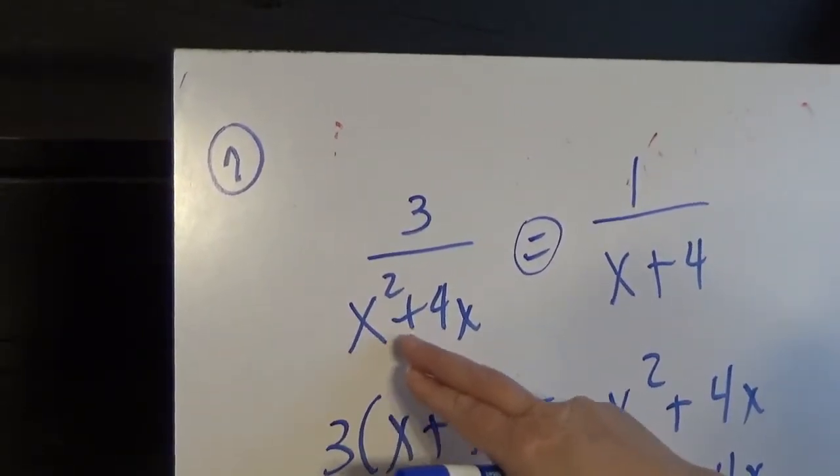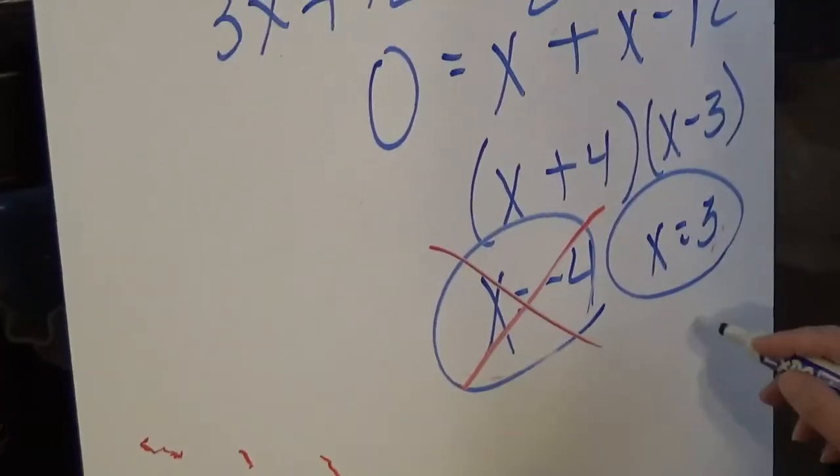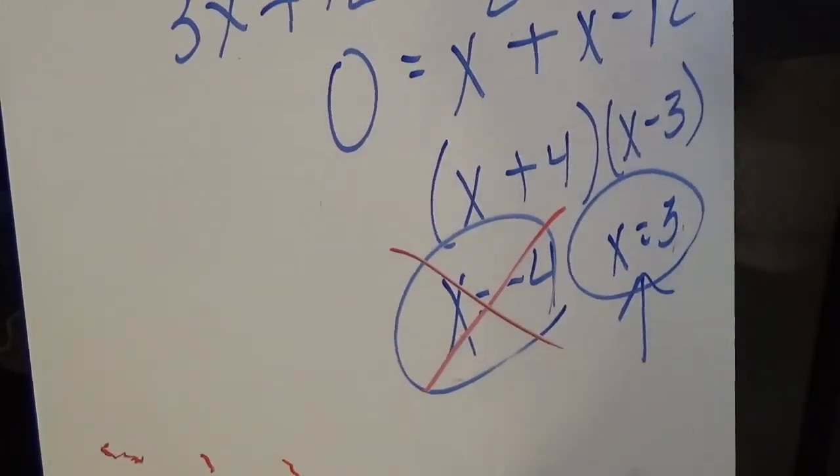3 squared is 9. 4 times 3 is 12. 9 plus 12 is 21. So that one's good. That's a great solution.